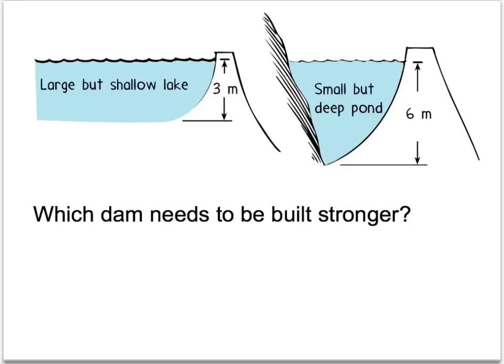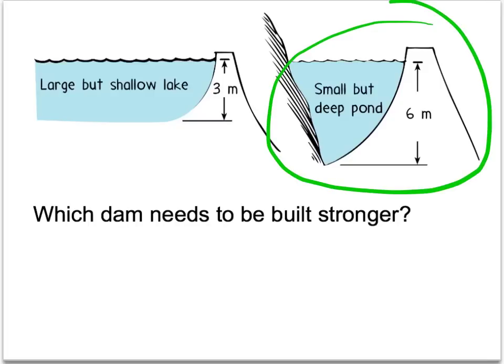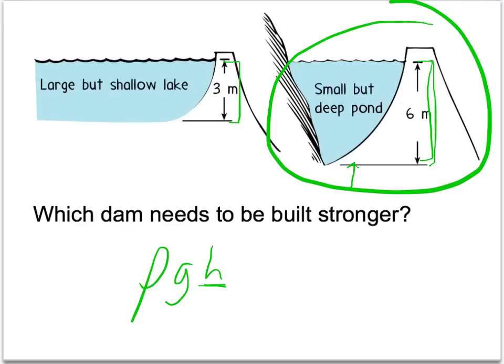So to answer our original question, it is the small but deep pond that will need the stronger dam, because the height of the water from the bottom of that pond is greater than the height for the shallow lake. The shallow lake will not need a very strong dam because, according to our expression for pressure rho G H, smaller height means smaller pressure. But the deep pond has bigger height, therefore bigger pressure. Remember: it is the height of the water or fluid that determines how much pressure there is. And that is it for absolute pressure.